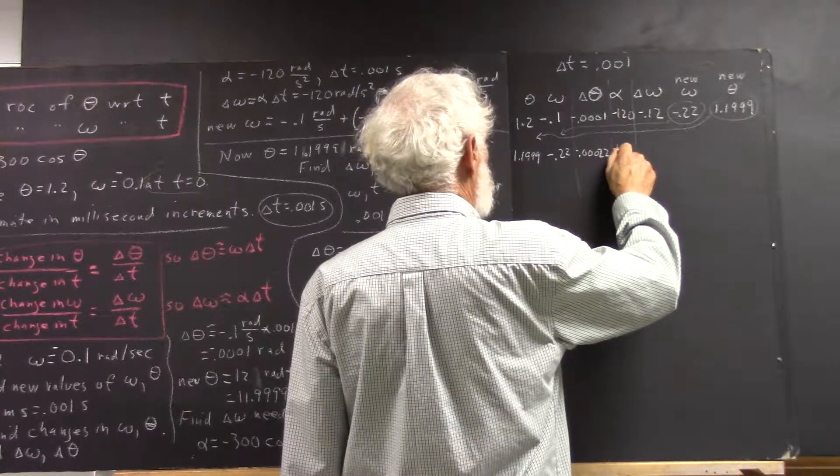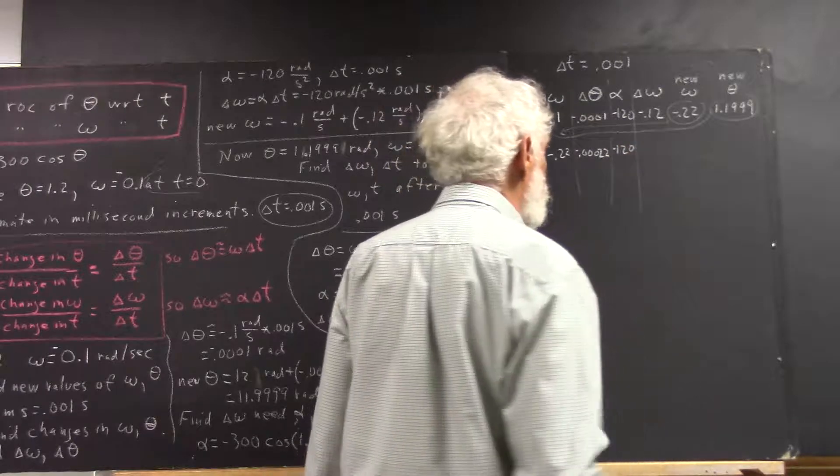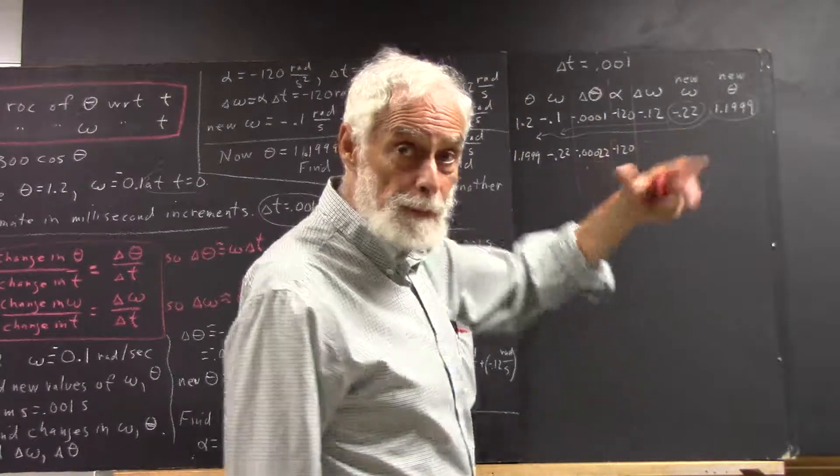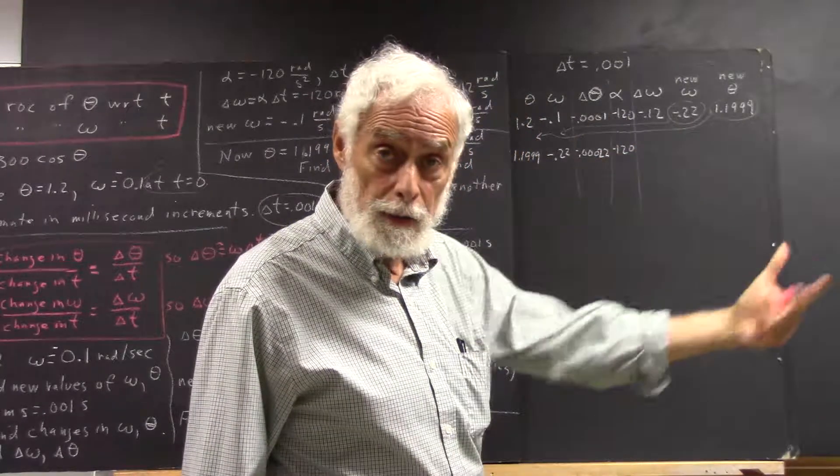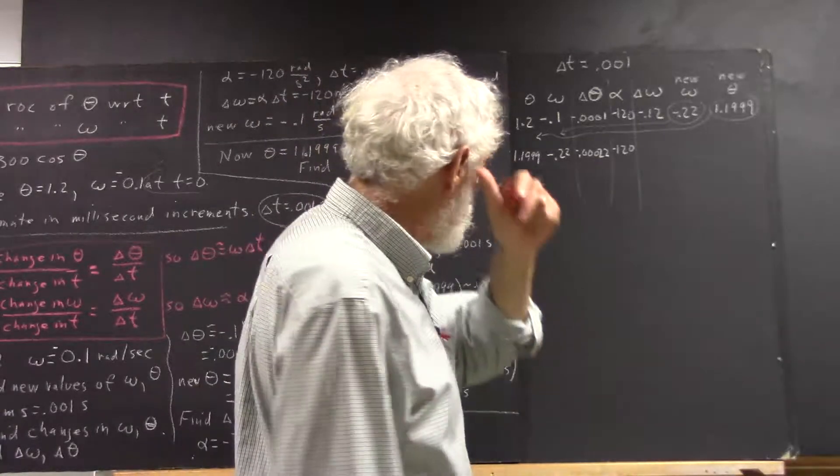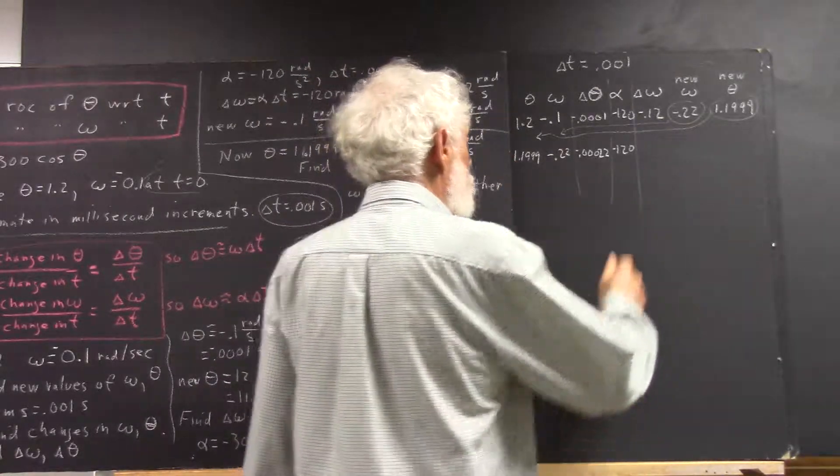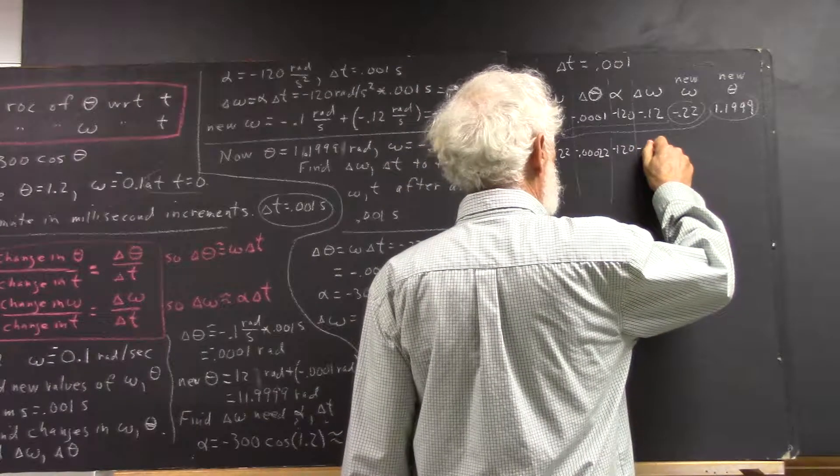Alpha would still be pretty close to negative 120, and remember that 120 is just my ballpark estimate. Put it into your calculator and eventually let Excel do it. Our delta omega would have been negative 0.12.